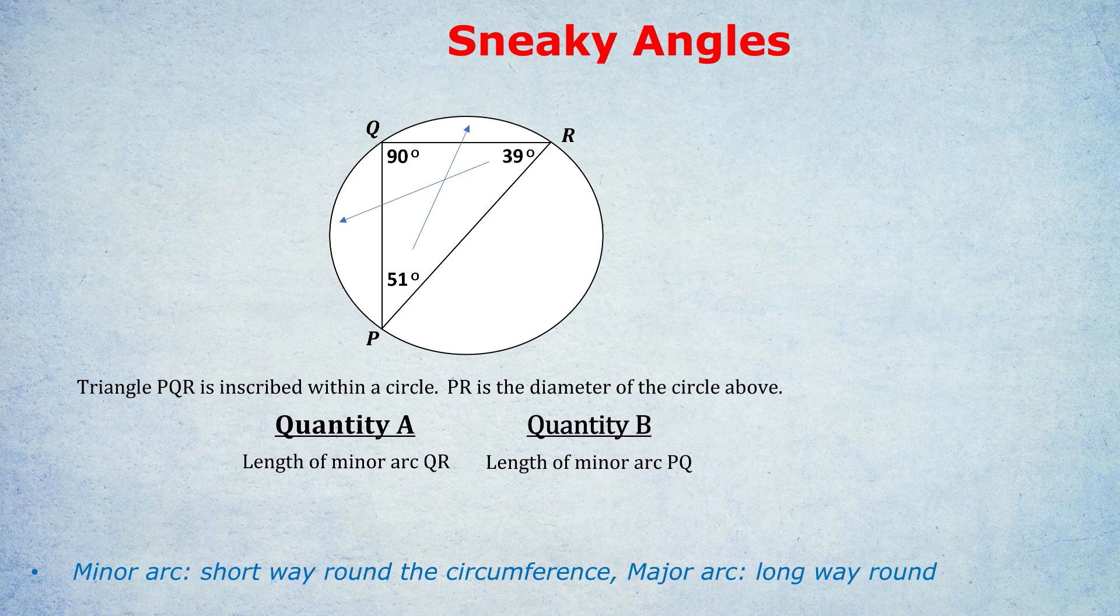Of course, the biggest arc of all is the one opposite the 90 degrees, PR. But that isn't the focus of the question. In summary, QR quantity A is bigger because the inscribed angle that it's opposite to is bigger than the angle opposite PQ. For 95% of students, what I've already said is enough, but I'm going to give one final example for those pushing for a 170 in the GRE or a 700 plus in the GMAT with this final example.